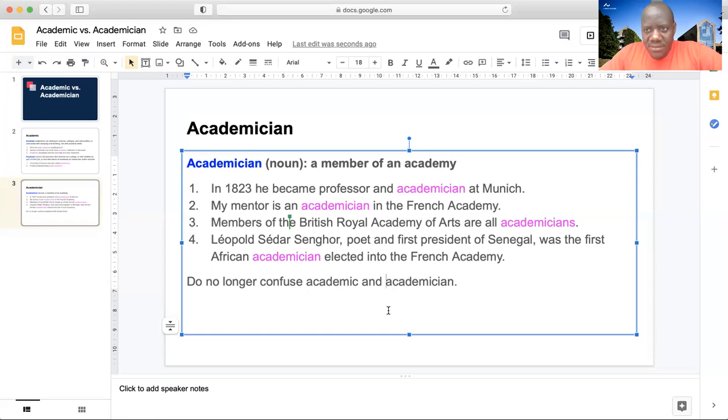while on the other hand, an academician is someone who is a member of a specific academy, not in the institutional or academic sense necessarily, but usually academies like the French Academy, l'Académie Française, or the British Royal Academy of Arts and so on.